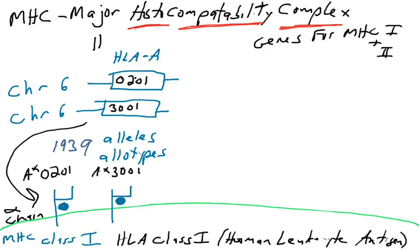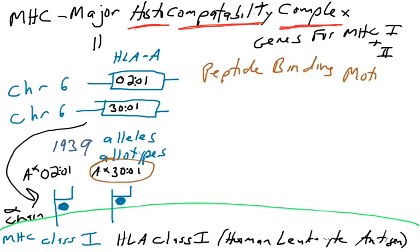Let's talk about a different version you might inherit — version A3001. This is a real HLA-A allele, and it makes an allotype, A3001. It's the same type of protein — an HLA-A alpha chain that presents peptide — but it may present a different peptide. That's actually a good thing, because we want to present as many peptides as possible to T cells. The more different peptides we can present, the better our immune system can recognize an infection.